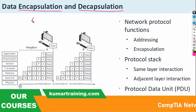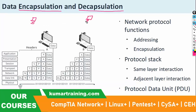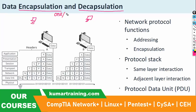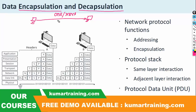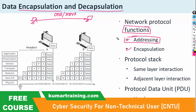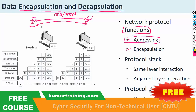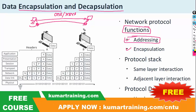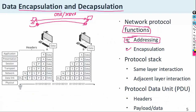When two computers or two devices are communicating with each other, it may be over one or more protocols. These network protocols have specific functions. The two main functions are Addressing and Encapsulation. In Addressing, the process defines where the data is coming from and where it should go — source and destination. Inside this process the data defines its destination and its source.